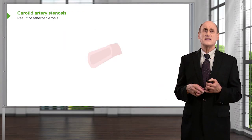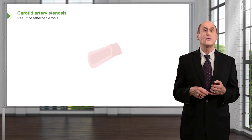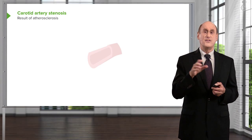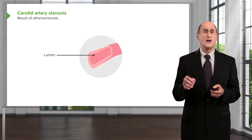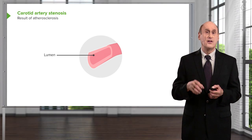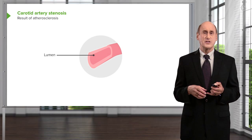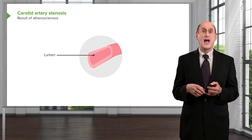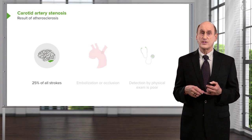Let's take an example of atherosclerosis — let's take the carotid artery. In this cartoon you see narrowing or constriction of the inner surface, the lumen, that is the channel of the carotid artery. This is almost always caused by atherosclerosis and accounts for 25% of all strokes.